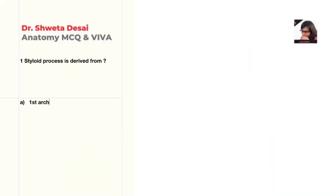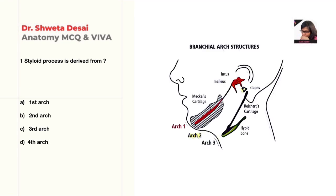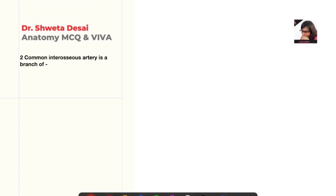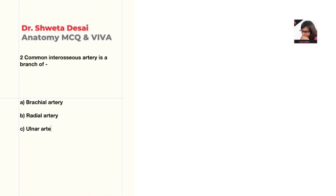A question on which style or process is derived from which arch — options are first, second, third, or fourth arch. The correct answer is the second arch. Next one: common interosseous artery is a branch of which artery?